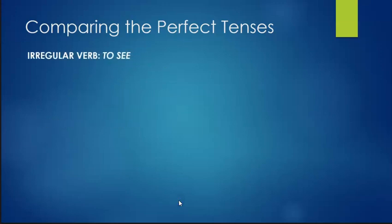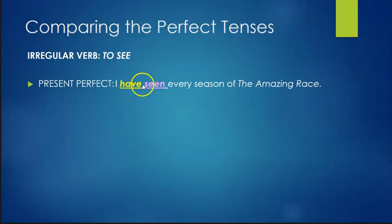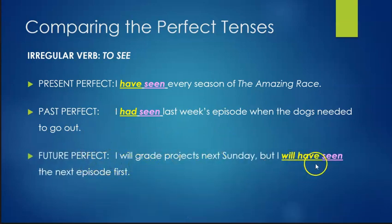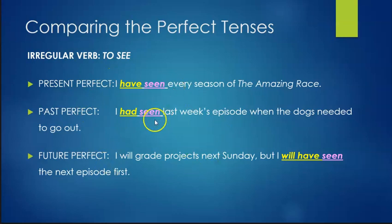Using the irregular verb 'to see' with the same sentences: the past participle of see is seen — I see, I am seen, I saw (past form), I have seen. Present perfect: have seen. Past perfect: had seen — 'I had seen last week's episode when the dogs needed to go out.' Future perfect: will have seen — 'I will have seen the next episode first.' Seen doesn't change across any perfect tense — you're always using seen and simply changing the tense of the helping verb.